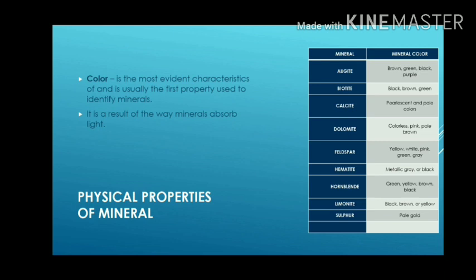Augite has a mineral color of brown, green, black, and purple. Augite is a rock-forming mineral also commonly found in intermediate igneous rocks such as basalt, gabbro, andesite, and diorite. These rocks are found throughout the world. Biotite is black, brown, and green. Calcite has pearlescent and pale colors.